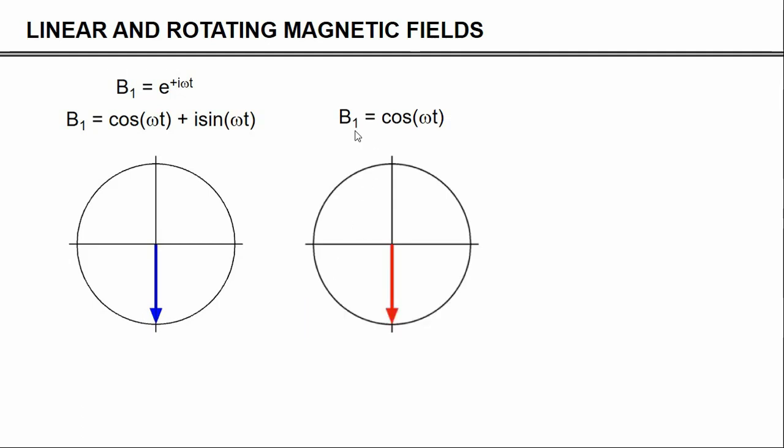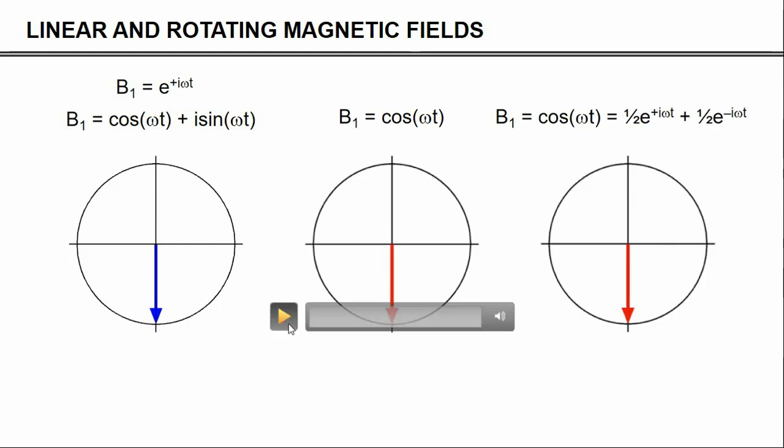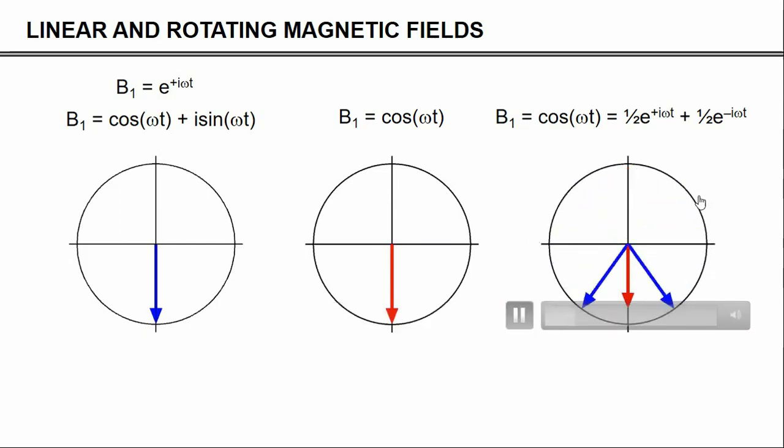A more common way is to only use a cosine modulated frequency along one axis. That will look like this. Well, this clearly doesn't look like the rotating B1 field that we want to have. However, mathematically, a cosine function can be described as a complex exponential with the frequency that we want, plus a complex exponential with a negative of that frequency. In other words, this cosine modulated frequency is really composed of two frequencies, one rotating clockwise, one rotating anticlockwise.